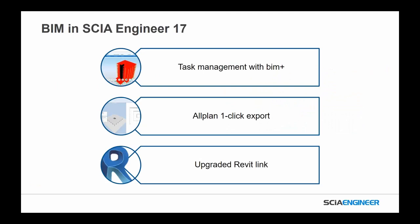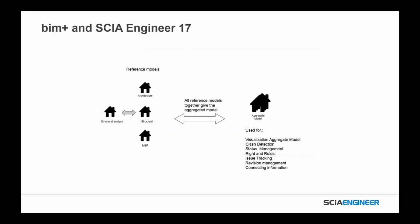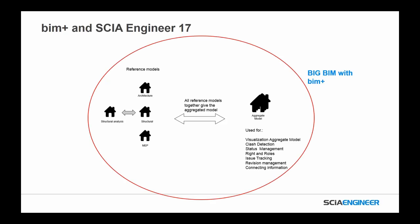In addition to steel and concrete workflow improvements, we also have BIM improvements on both the front end and the back end. These fall into three main levels: BIM+, Allplan, and Revit. Within BIM+, C Engineer 17 has directly integrated big BIM collaboration based on the BIM+ platform. When doing structural analysis you need to reference models from architecture, structural, and MEP and aggregate them all into one model for visualization, clash detection, rights and roles, issue tracking, and revision management.